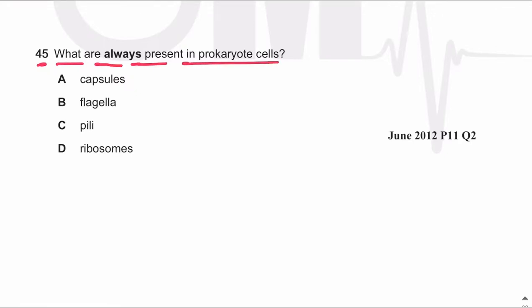This MCQ asks what structure is always present in bacteria — found in all bacteria. The answer is ribosomes. Ribosomes are found in all bacteria, whereas structures like capsules, flagella, and pili are found only in some bacteria; they are not always present in prokaryotes.